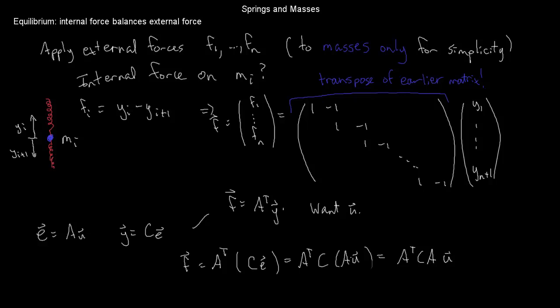A transpose C A is a positive definite matrix — it's exactly a weighted Gram matrix. Remember that the columns of A are linearly independent, so this is essentially a Gram matrix, and it's positive definite. In particular, the whole thing is easily invertible, which means that this equation has a unique solution.